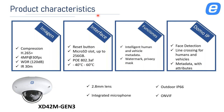The metadata camera characteristics: H.265+ compression, 4 megapixels at 30 frames, WDR of 120dB, infrared distance of 30 meters, reset button, micro SD slot up to 256 gigabytes, PoE standard 802.3af. Functions include intelligent human and vehicle metadata, watermark, privacy mask, basic AI — line crossing, motion detection, region entrance and exiting — face detection (not recognition), line crossing for humans and vehicles, and of course metadata with attributes. The lens is 2.8mm with an integrated microphone. Can also be used for exterior installations.